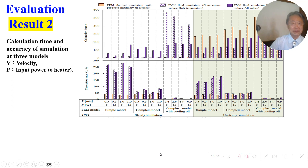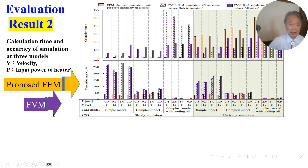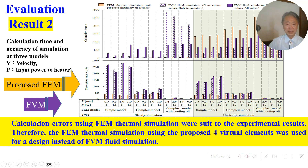This is the second result. This shows steady simulation and unsteady simulation. The upper part is calculation time, the lower part is calculation error, comparing simple model, complex model, and fluid model. Orange is proposed FEM, purple is FVM. The calculation error using FEM thermal simulation was close to the experimental results.